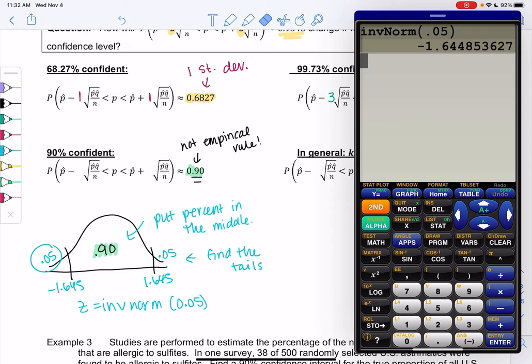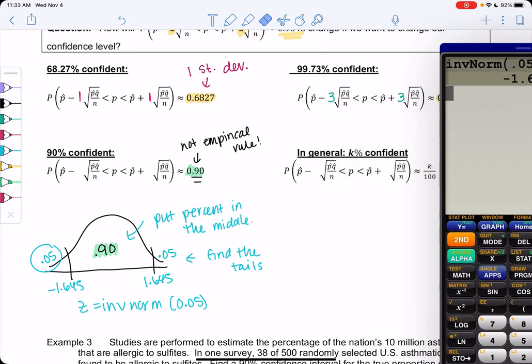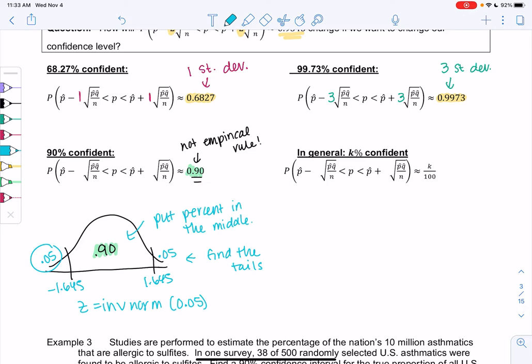So we get 1.645. The calculator is giving us negative because it's calculating the left side. The table is just calculating the right side. Either way, we know it's both of these z scores. And so the formula then just becomes p hat minus 1.645 times the standard deviation and then plus 1.645 times the standard deviation. So basically the formula is just changing the coefficient in front of the square root.